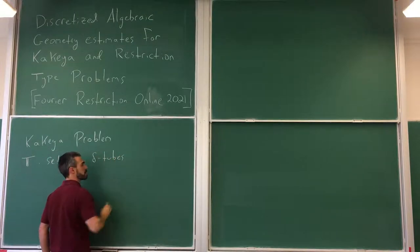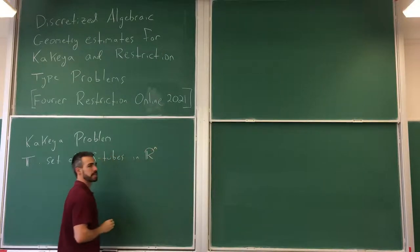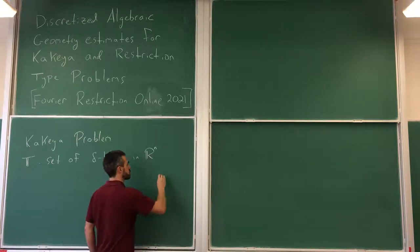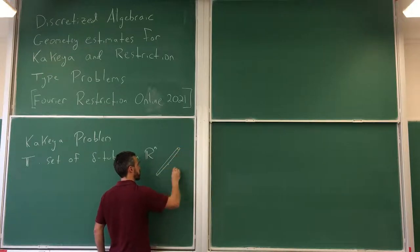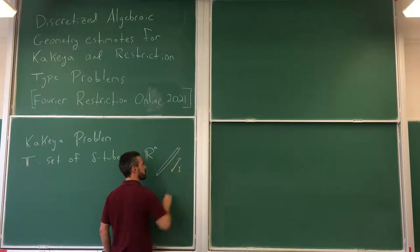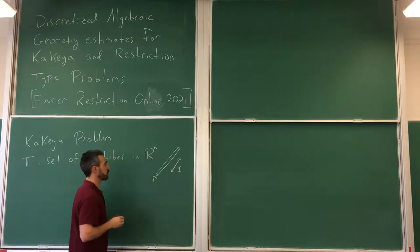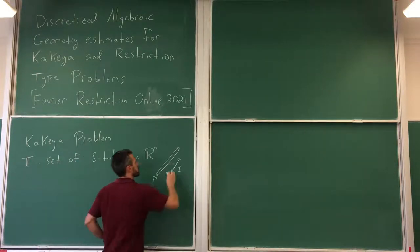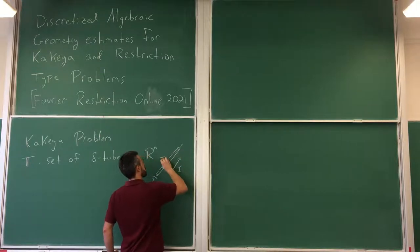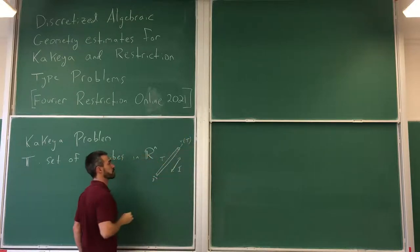Delta is a small positive parameter, and we are in n-dimensional Euclidean space, R^n. N has to be at least two for this to make sense. In R^3, you can think of a delta tube as an uncooked piece of spaghetti: it has length one in one direction (the long direction) and width delta in all of the other directions. So the volume of this tube would be delta to the n minus one. Associated with this tube is a direction V(T), which is well-defined up to order delta.